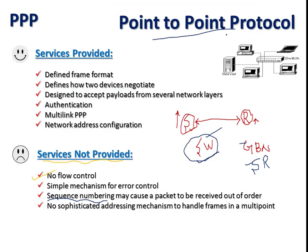In PPP there is no control for the flow of data, so the sender does not consider how the receiver is collecting data. Because there is no flow control, there is no sequence numbering either, which may cause packets to be received out of order. Additionally, in a multi-point communication there is no proper addressing mechanism to handle different frames. These missing services can make the system inefficient in some cases.